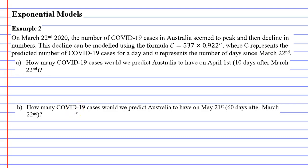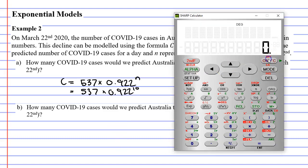So the first thing we're going to do is copy the formula down. C equals 537 times 0.922 to the power of N. And we're looking at 10 days later, which means N equals 10. So we'll go 537 times 0.922 to the power of 10. Bringing up our calculator.